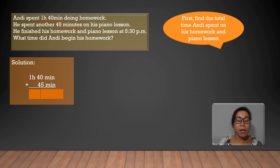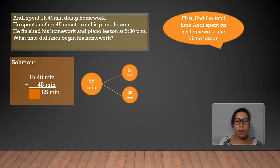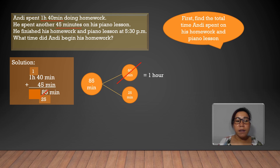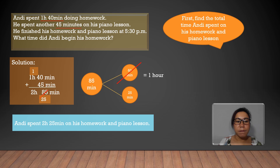We begin by adding the minutes: 40 minutes and 45 minutes equals 85 minutes. We can break down 85 minutes into 60 minutes and 25 minutes, because 60 minutes equals 1 hour. We are left with 25 minutes. Now add 1 hour to another 1 hour: 1 hour plus 1 hour is 2 hours. Andy spent 2 hours and 25 minutes on his homework and piano lesson.